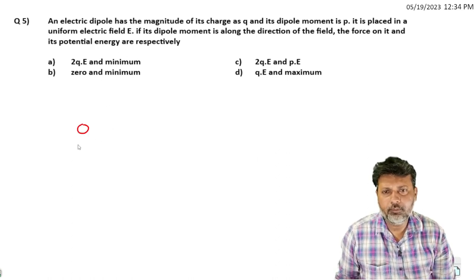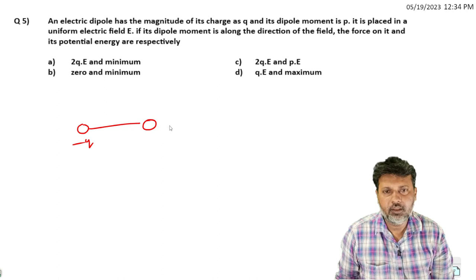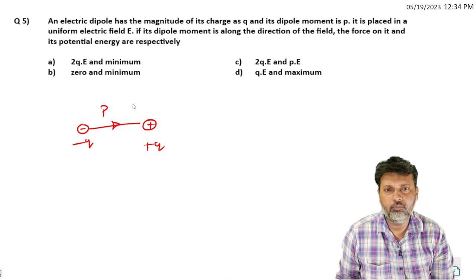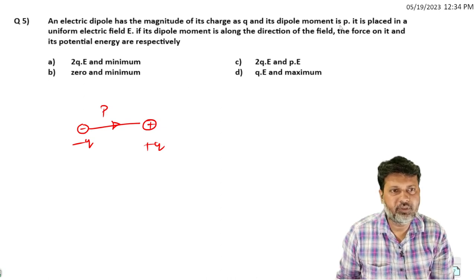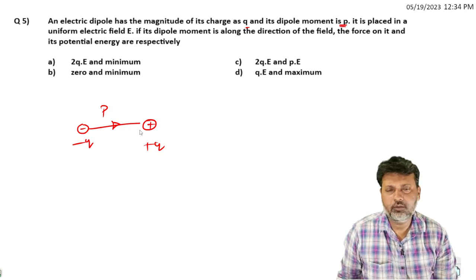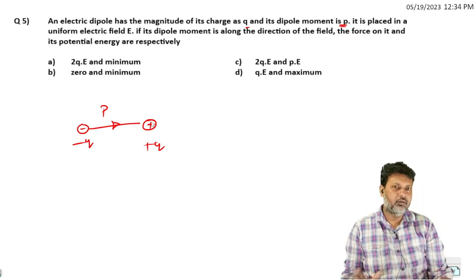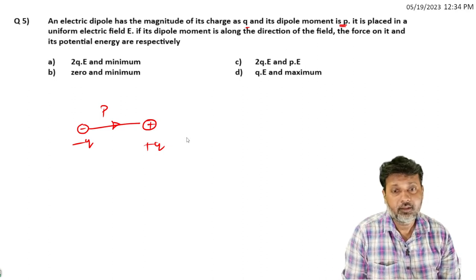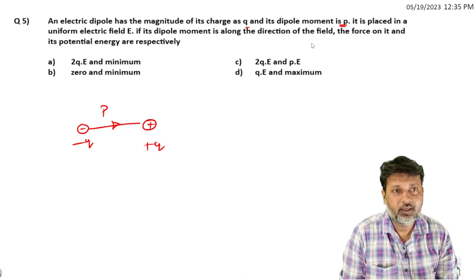What is a dipole? A dipole means a -q charge and a +q charge. This is the direction of dipole moment, which is denoted as p. The charges in a dipole are +q and -q type. The magnitude of charge is the same, but they are unlike charges.